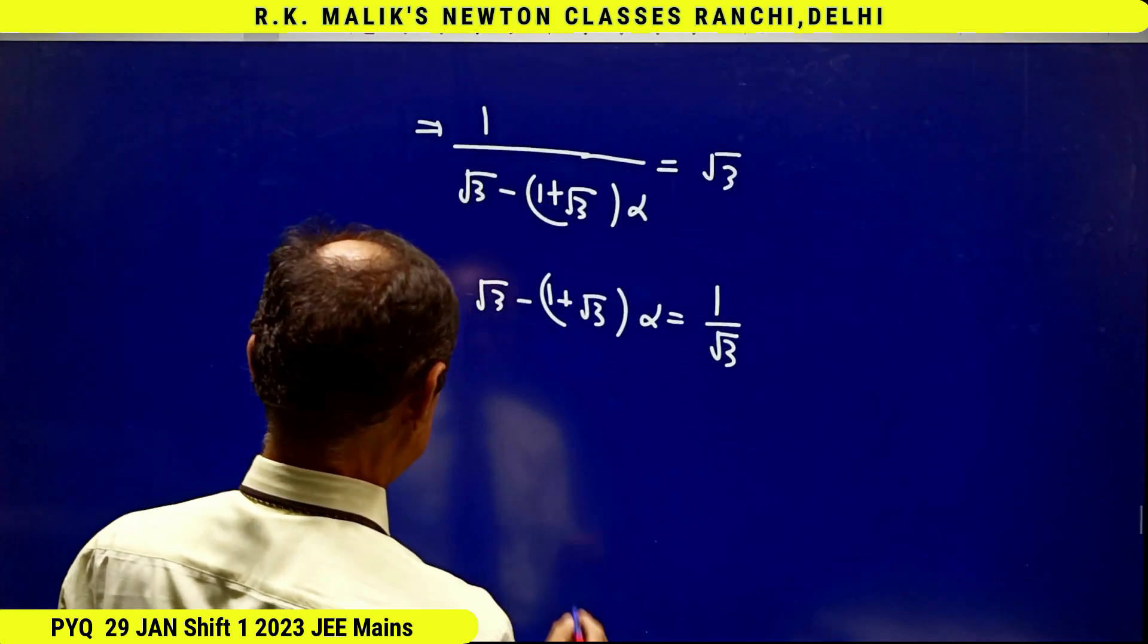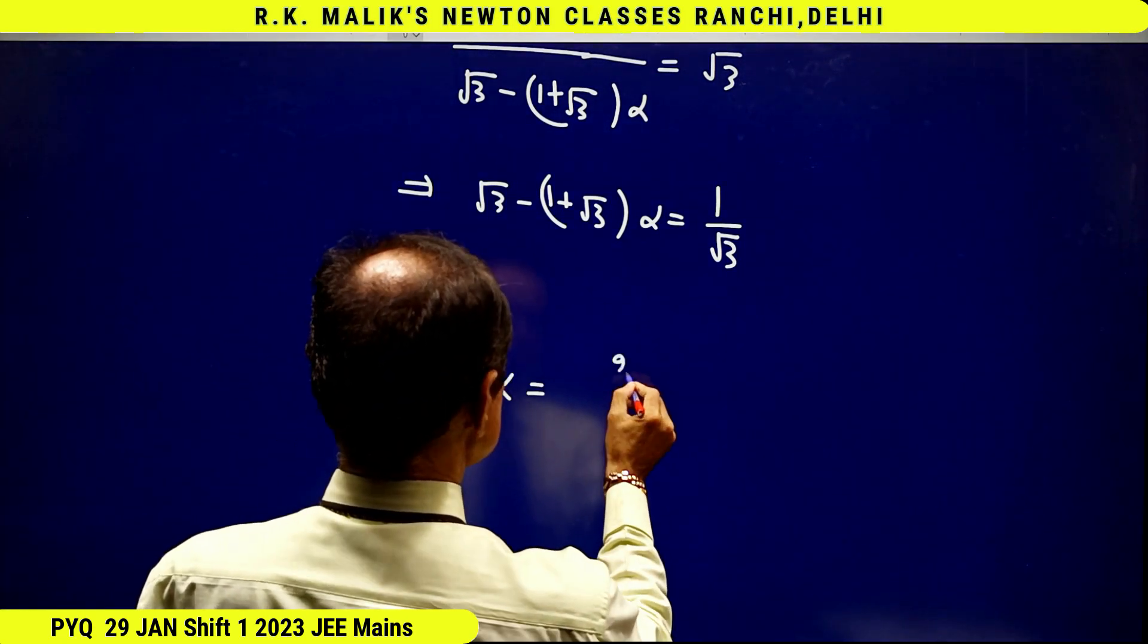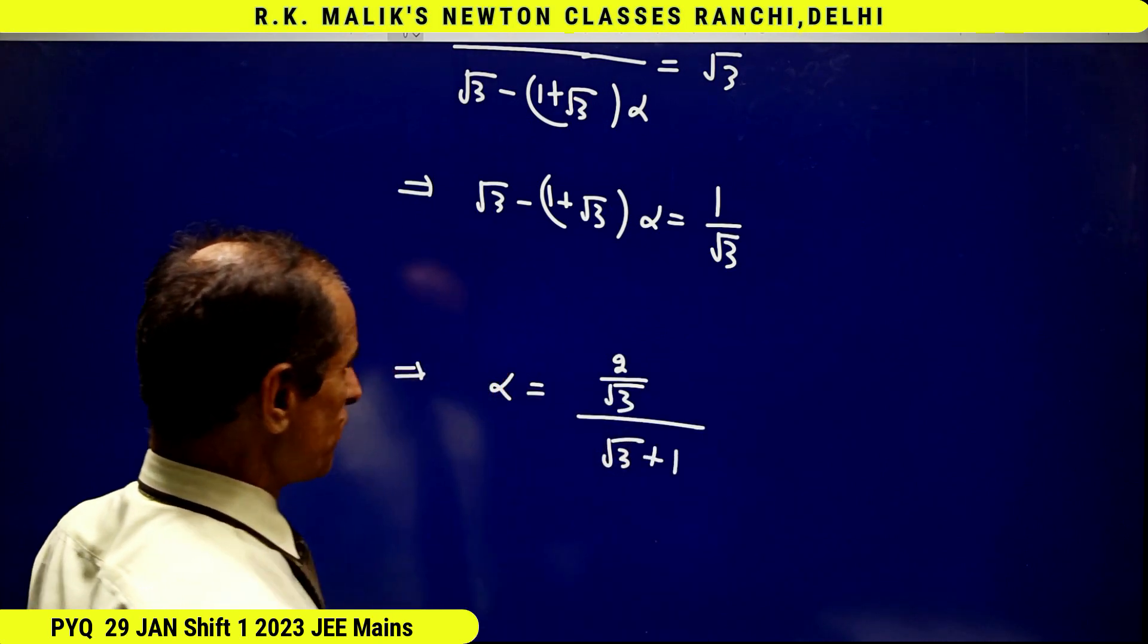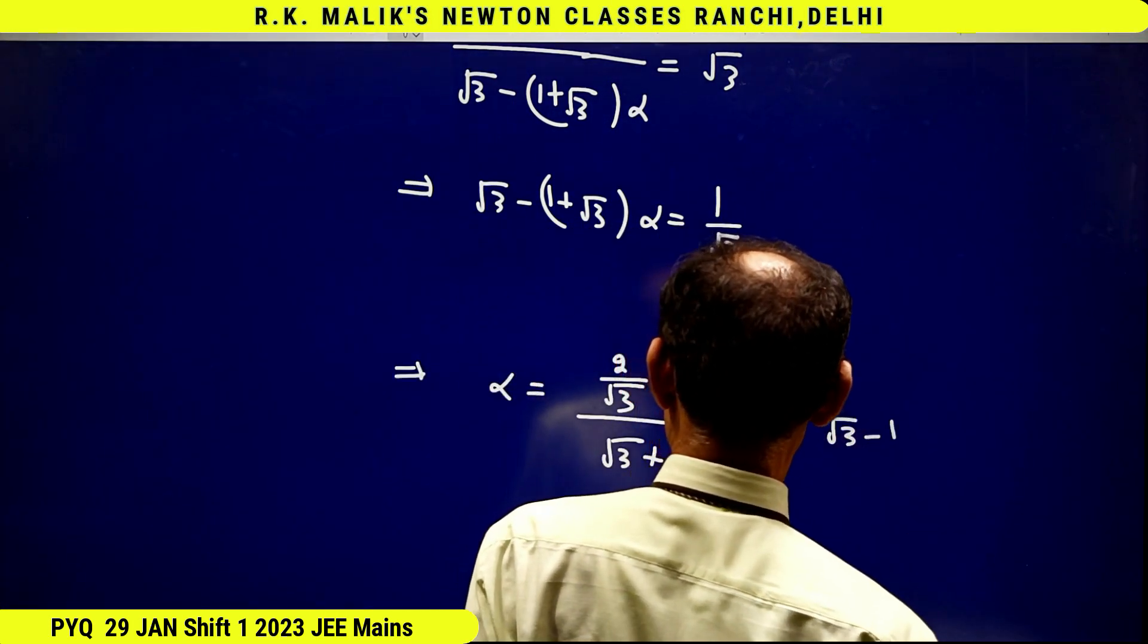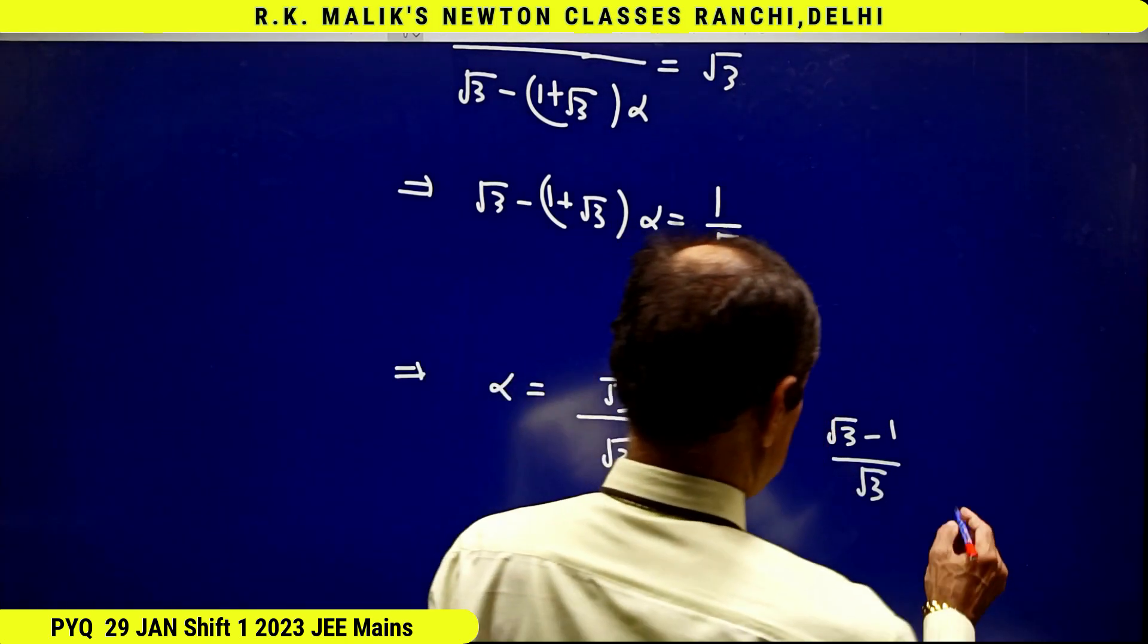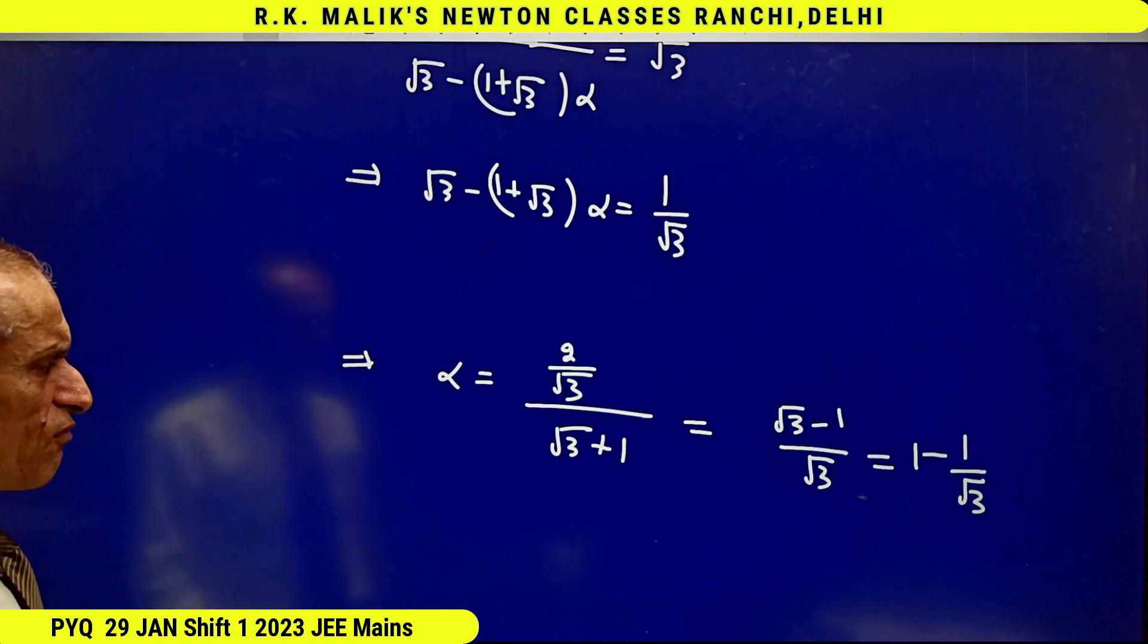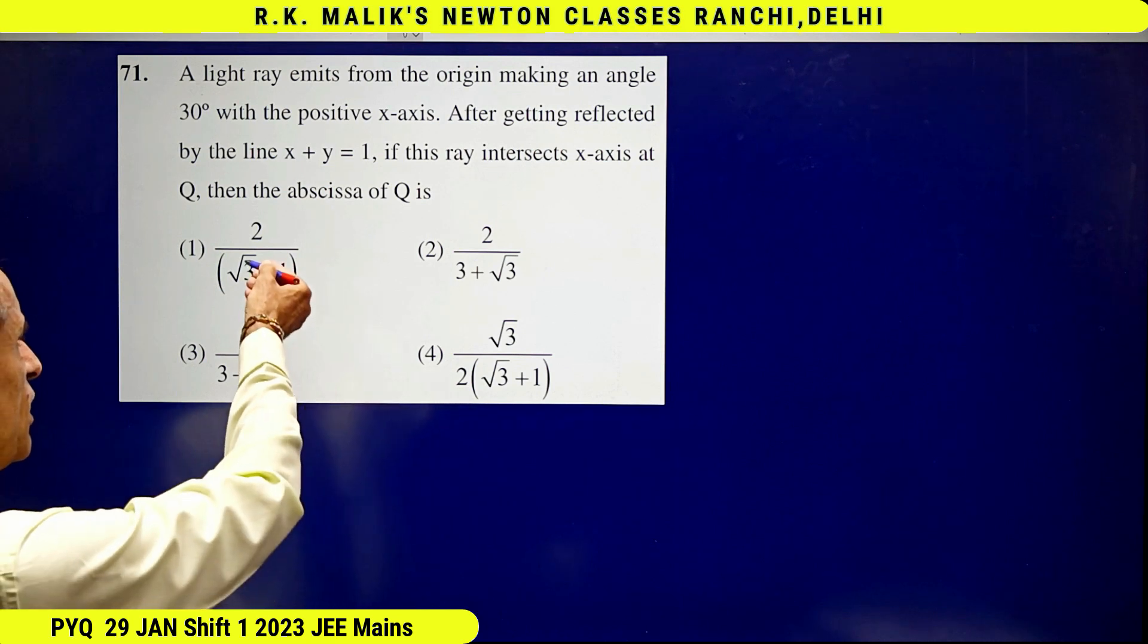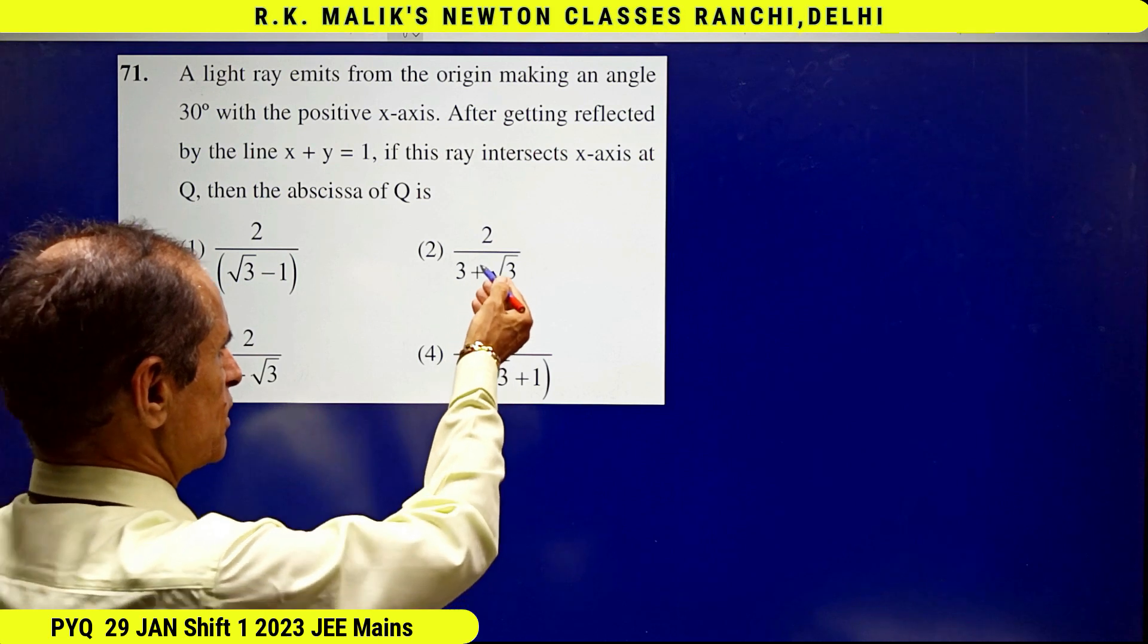This implies that α = (2/√3)/(√3 + 1), which equals (√3 - 1)/√3, that is 1 - 1/√3. Check which one is 1 - 1/√3. It is clearly more than 1, hence this cannot be correct.